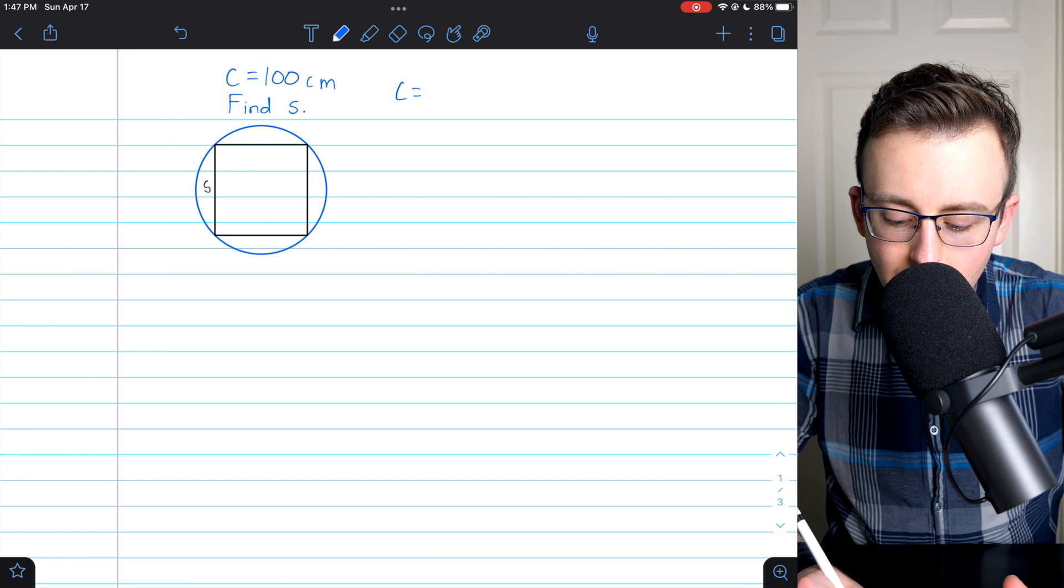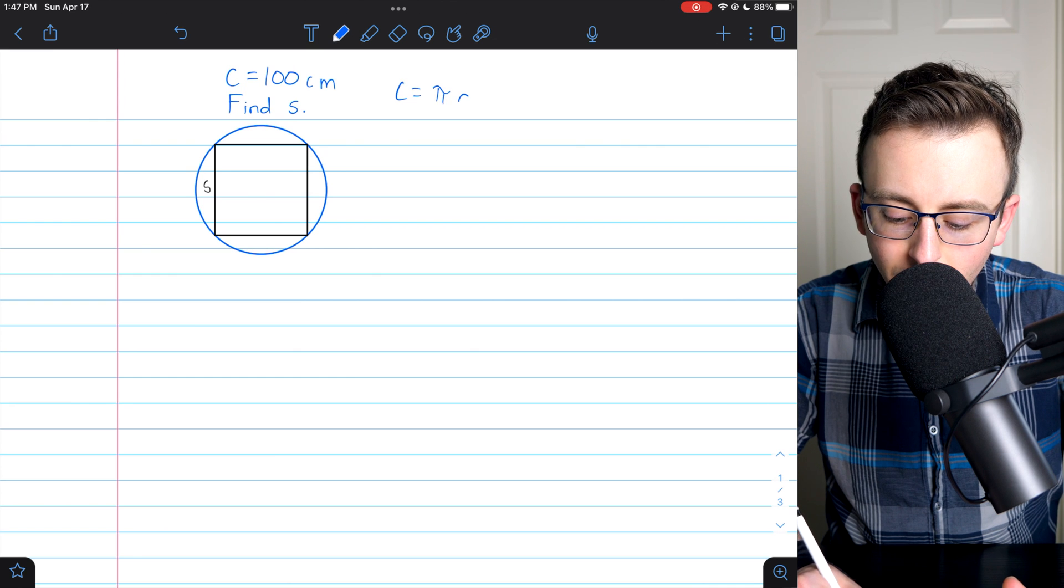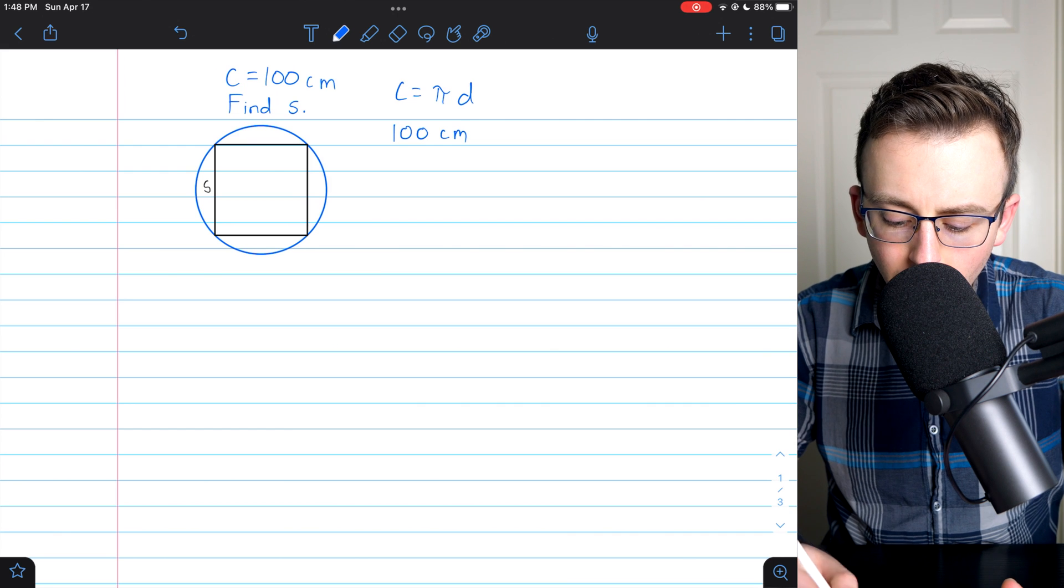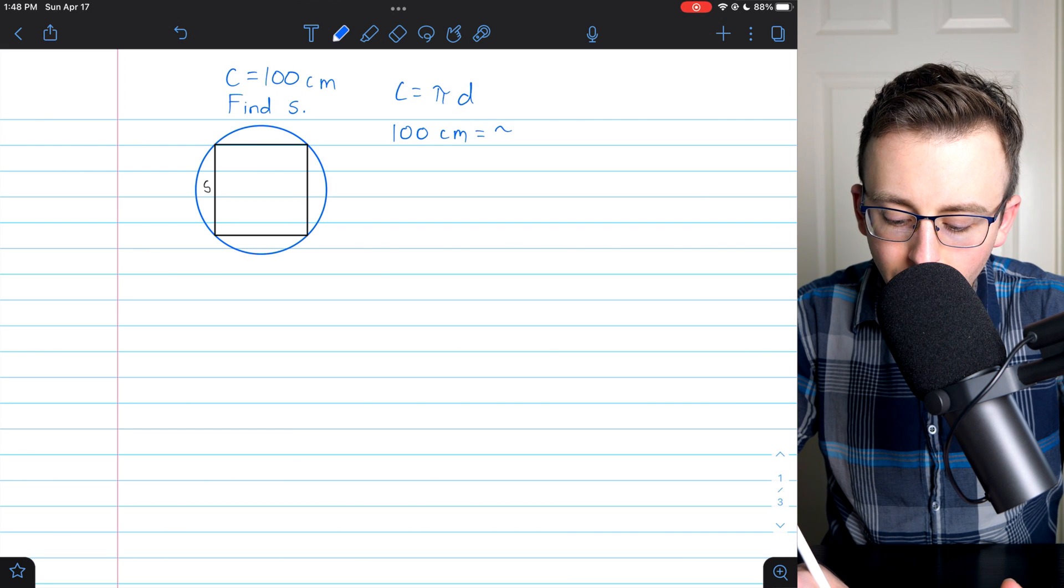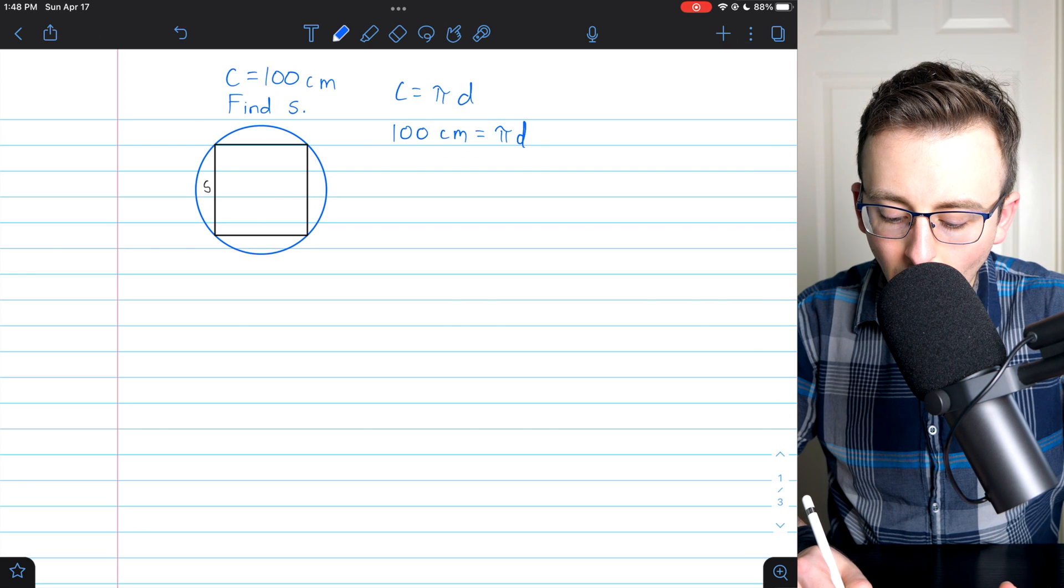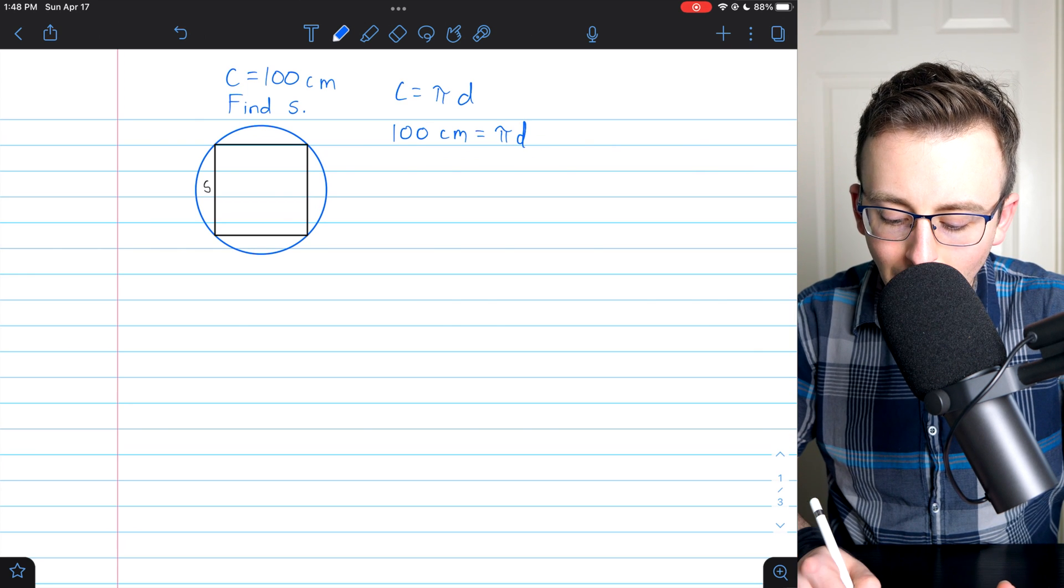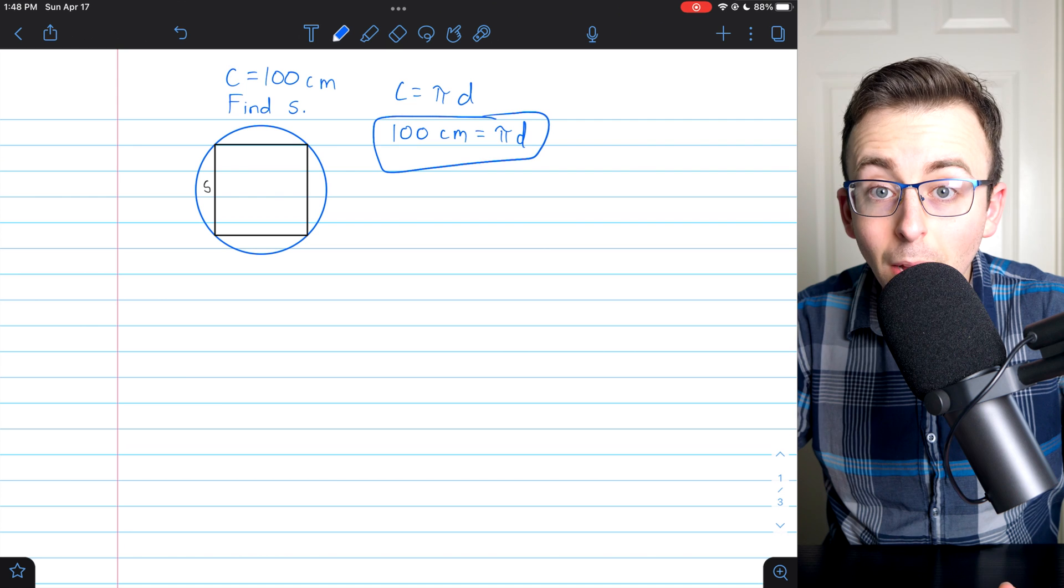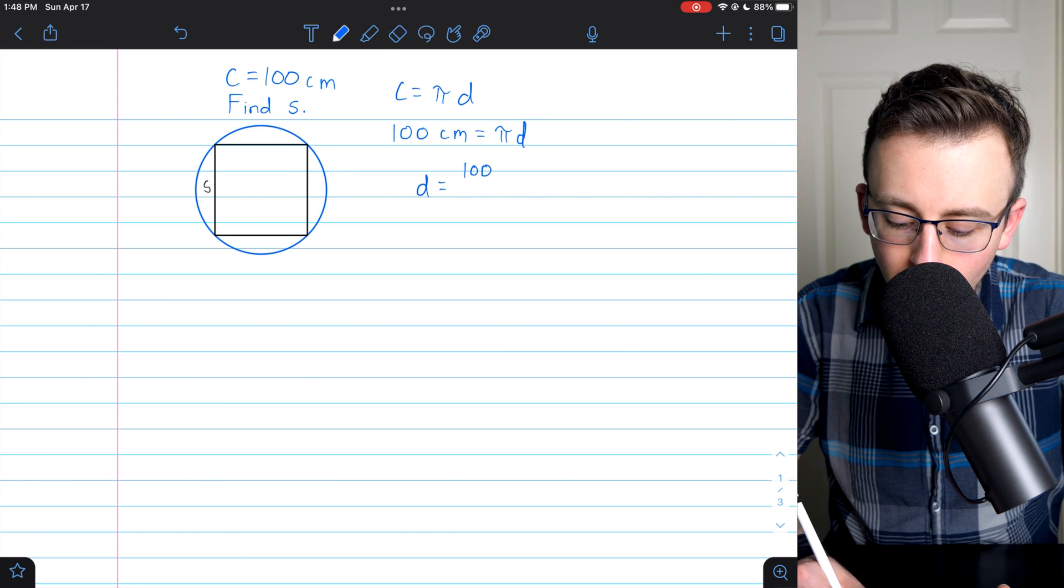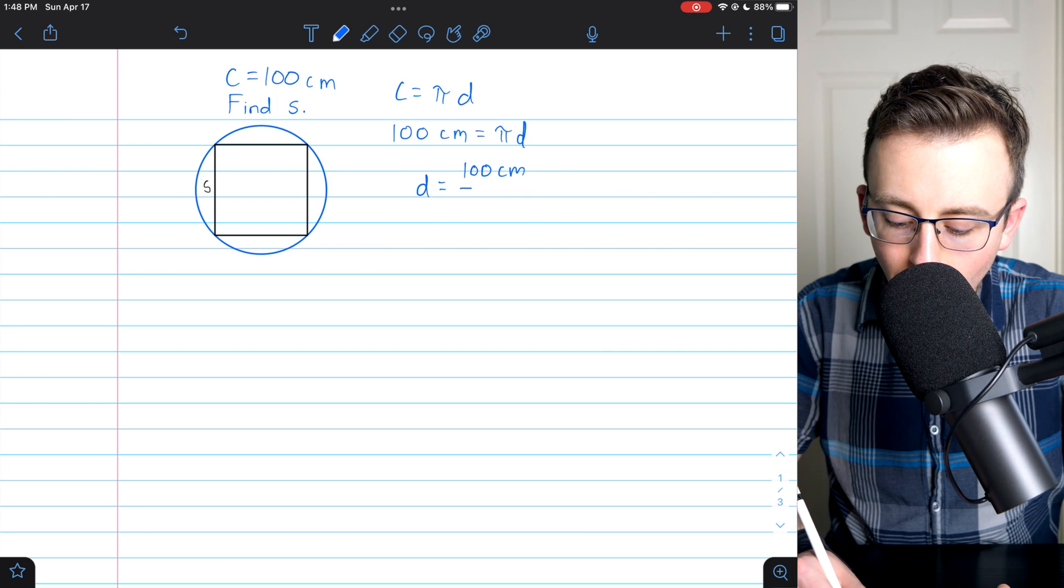Circumference is equal to pi times diameter. So since we know the circumference is 100 centimeters, we could find the diameter of this circle. Setting up this equation, then solving for d by dividing both sides by pi, we find that d, the diameter of the circle, is 100 centimeters divided by pi.